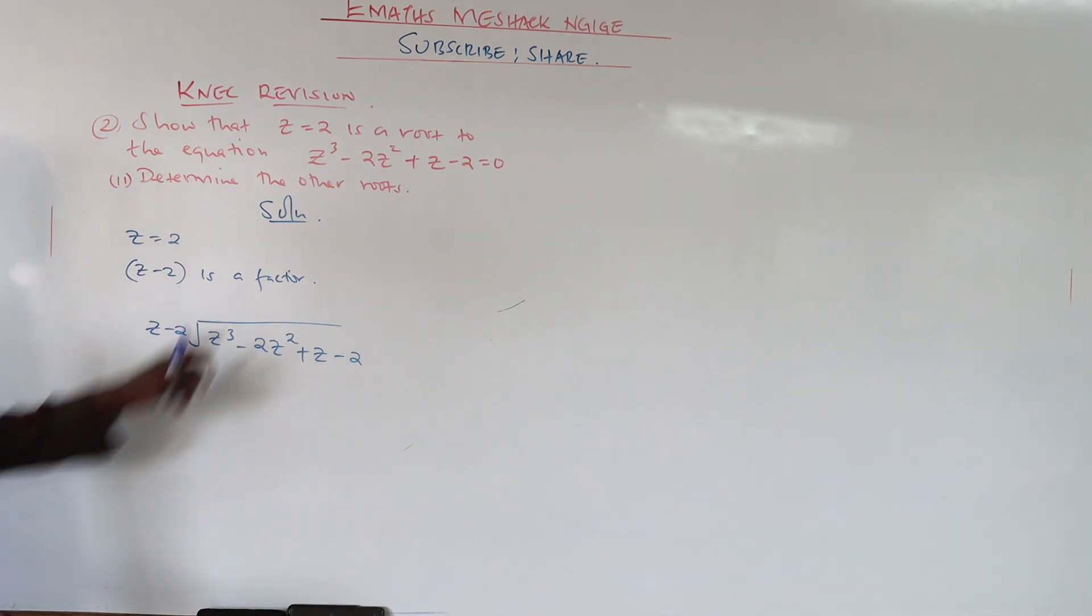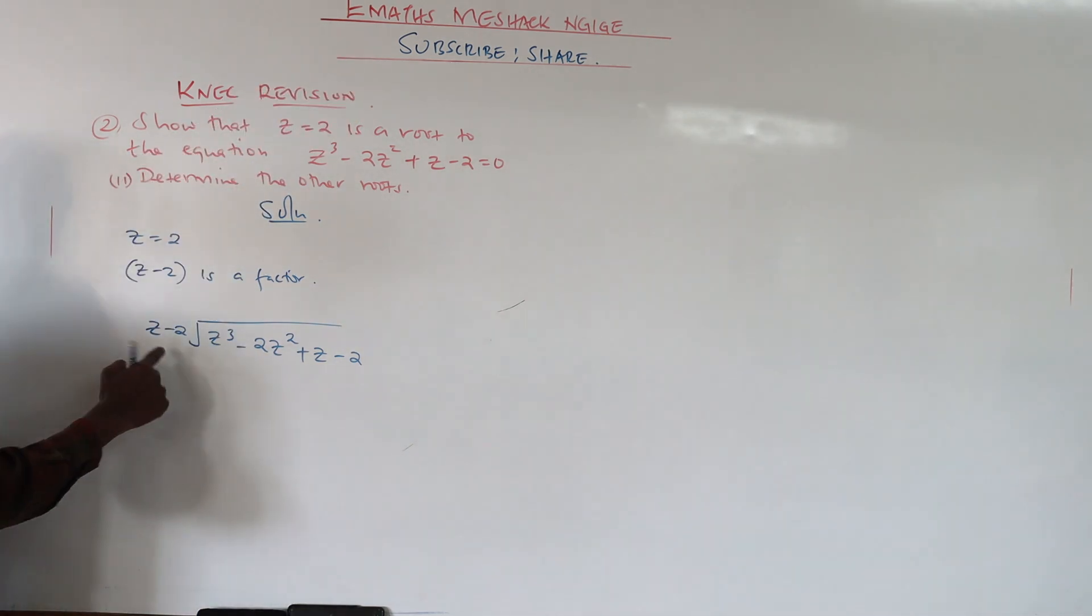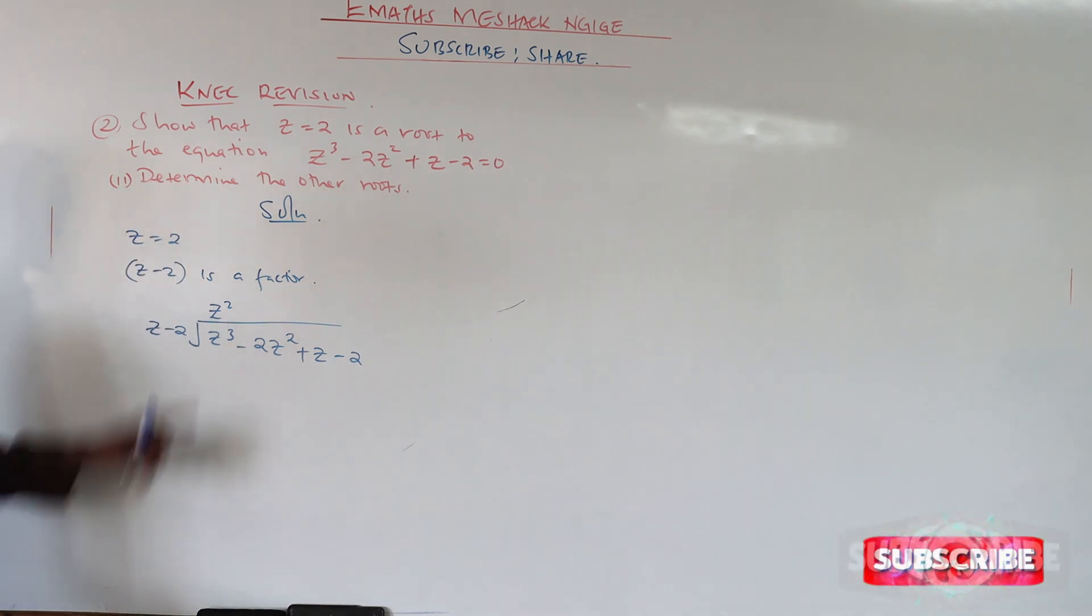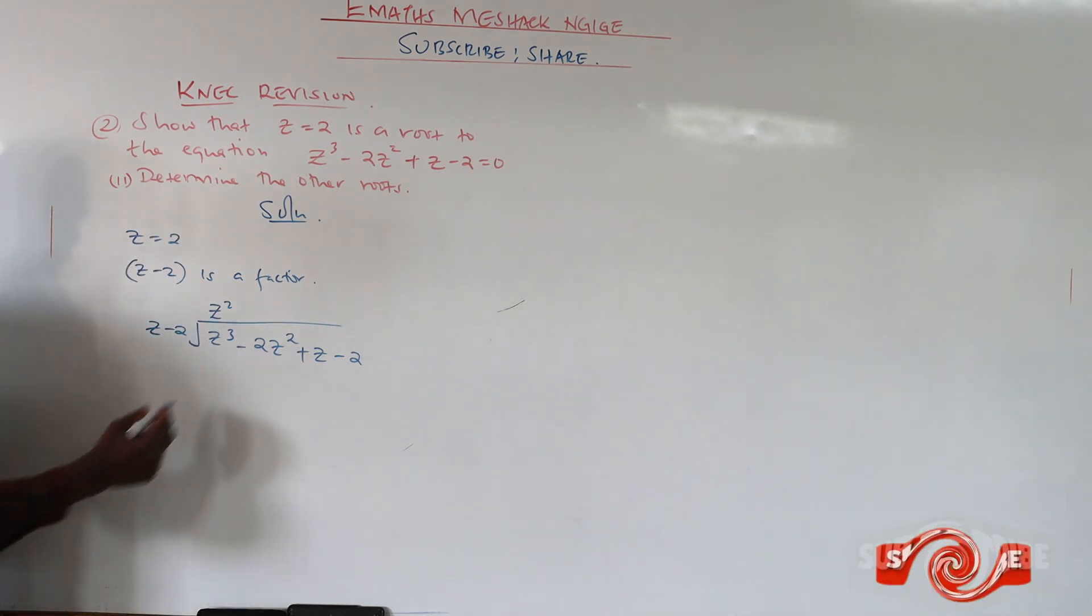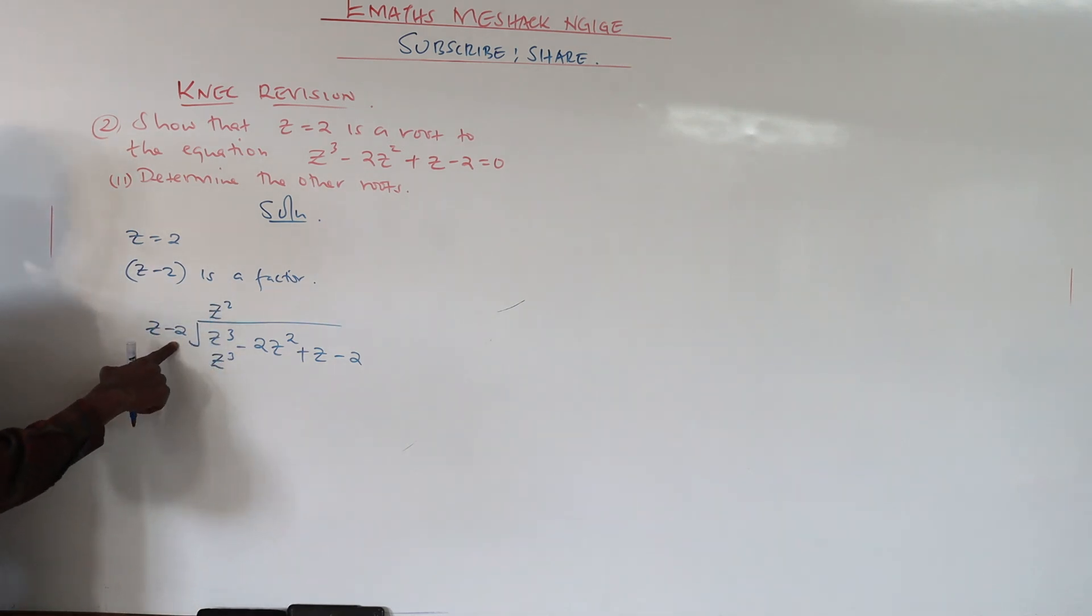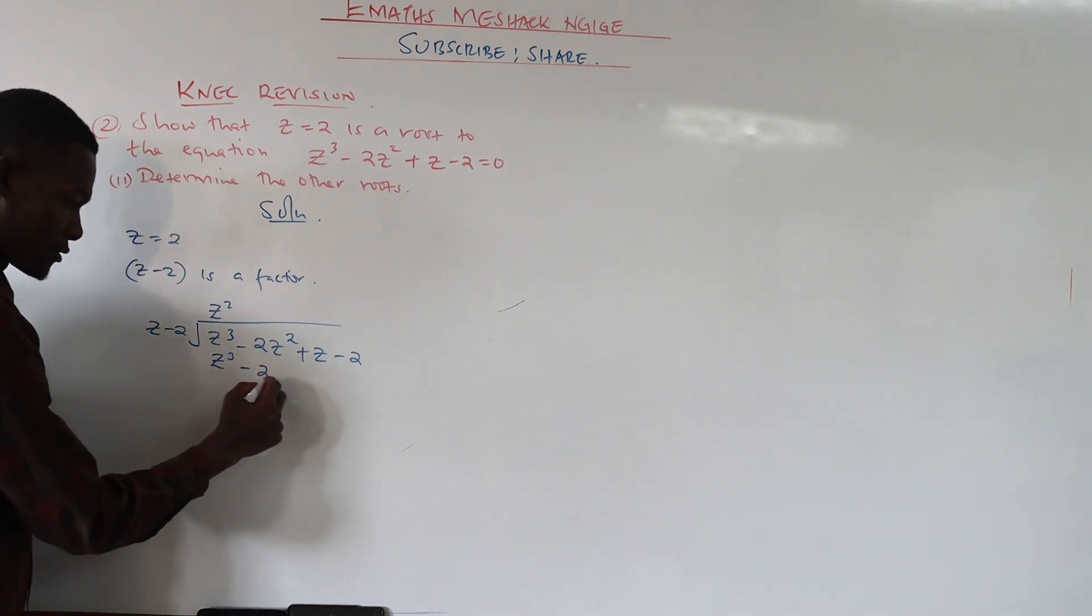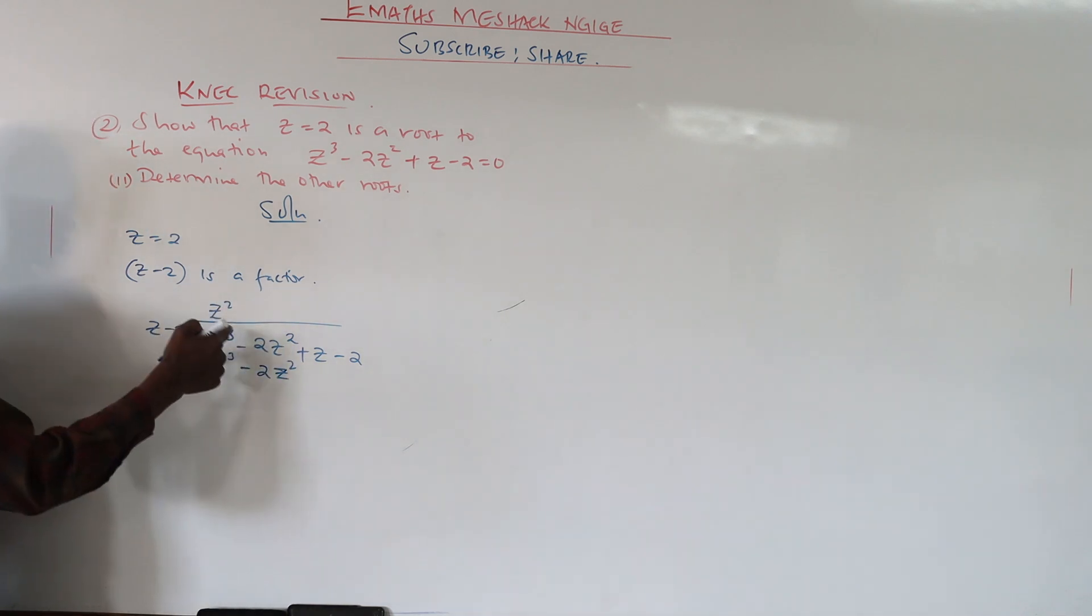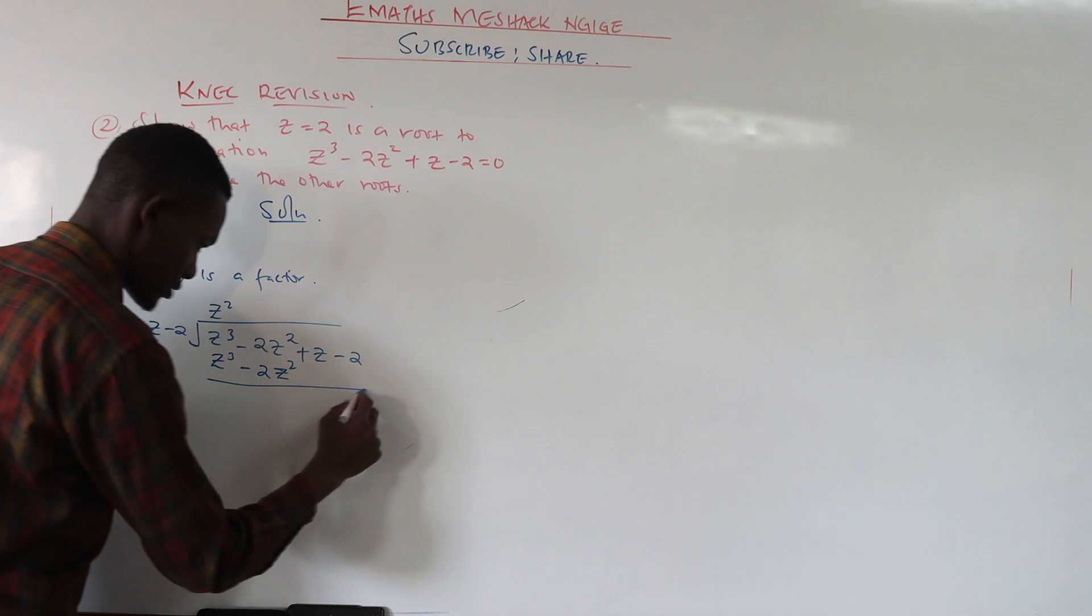This is the function without the zero. How do we make the variable in the first position z cubed? We multiply by z squared. Z squared times z gives us z cubed. Z squared times negative 2 gives us negative 2z squared. So we subtract.